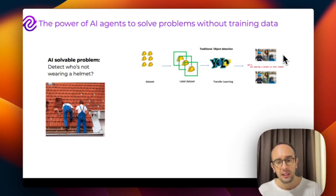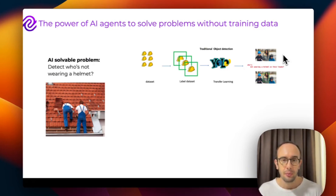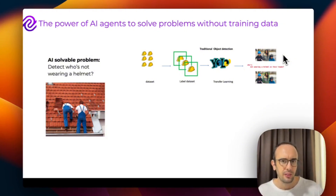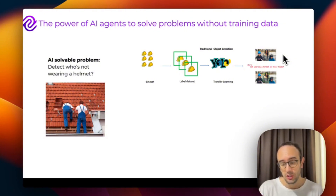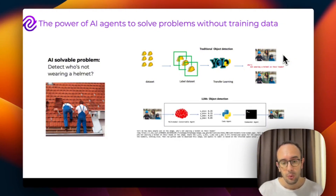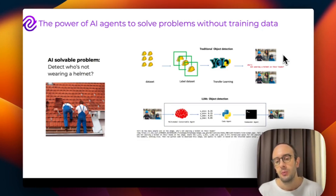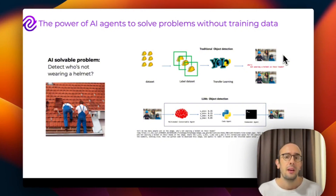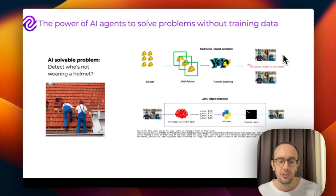After doing all that labeling, you can create your application for detecting if people are wearing helmets in images. This is time-consuming and quite expensive to do traditionally. But today there are alternative approaches using multimodal AI agents.